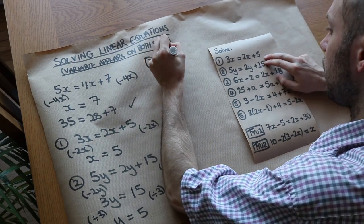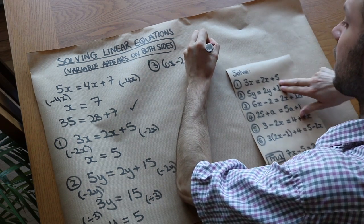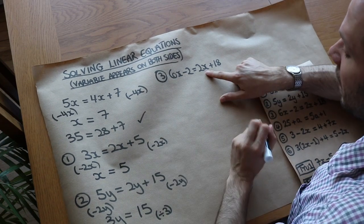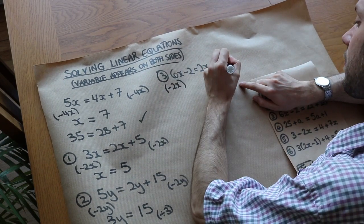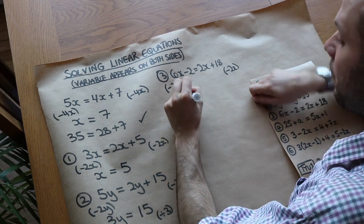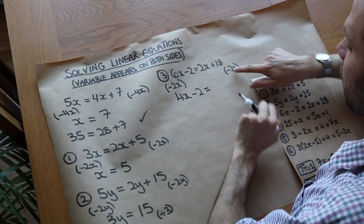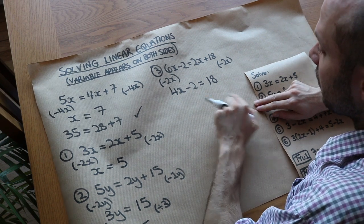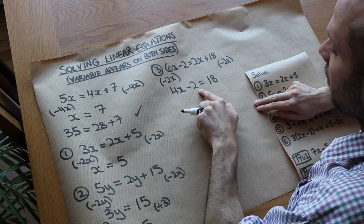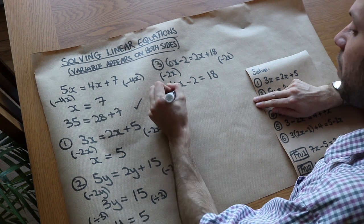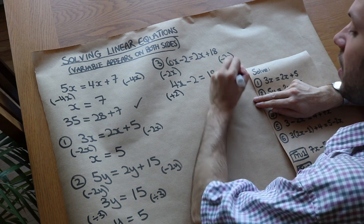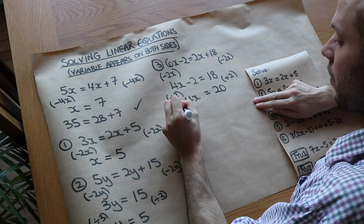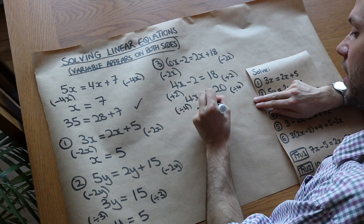We've got 6x minus 2 is equal to 2x plus 18. We decide: 6x is bigger than 2x, so subtract 2x from both sides. 6x minus 2x is 4x, and we still have the minus 2. The 2x cancels leaving 18. Now we undo in reverse order: the last thing done was subtract 2, so we add 2 to both sides, giving 4x equals 20. Then divide by 4, so x equals 5.